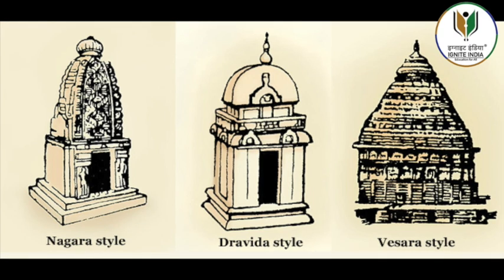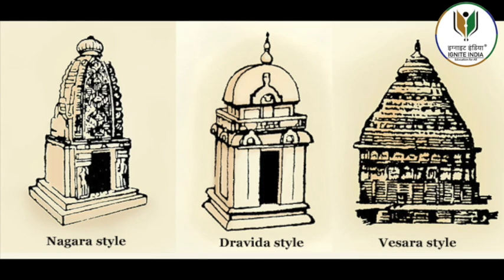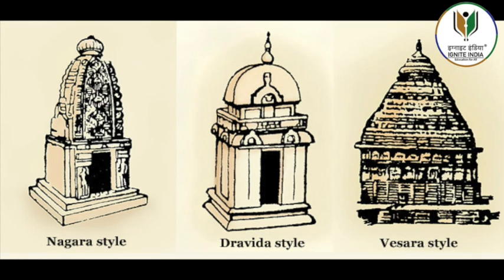Kanchipuram, Tanjavur or Tanjore, Madurai and Kumbakonam are the most famous temple towns of Tamil Nadu, where during the 8th to 12th centuries the role of the temple was not limited to religious matters alone. Temples became rich administrative centers, controlling vast areas of land.